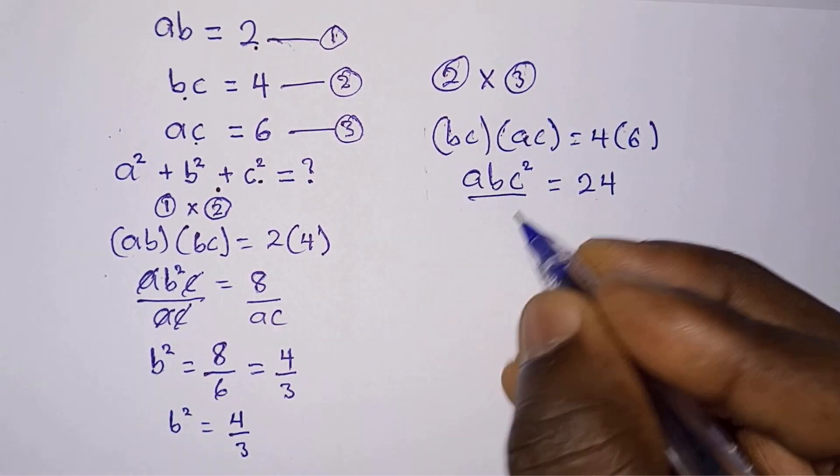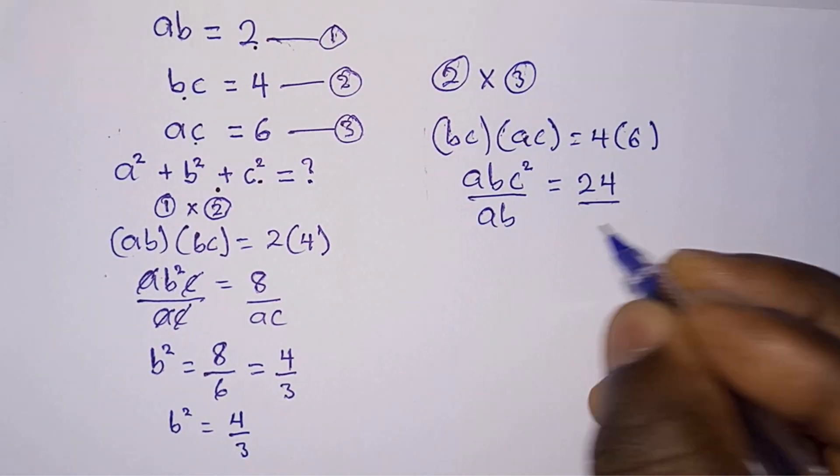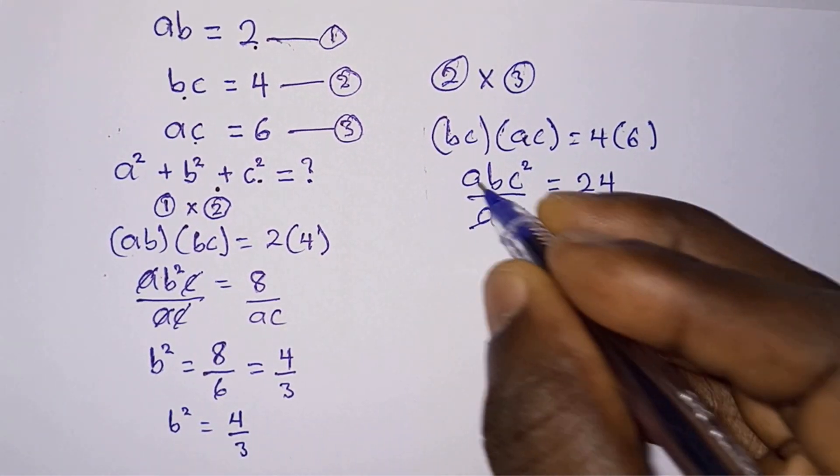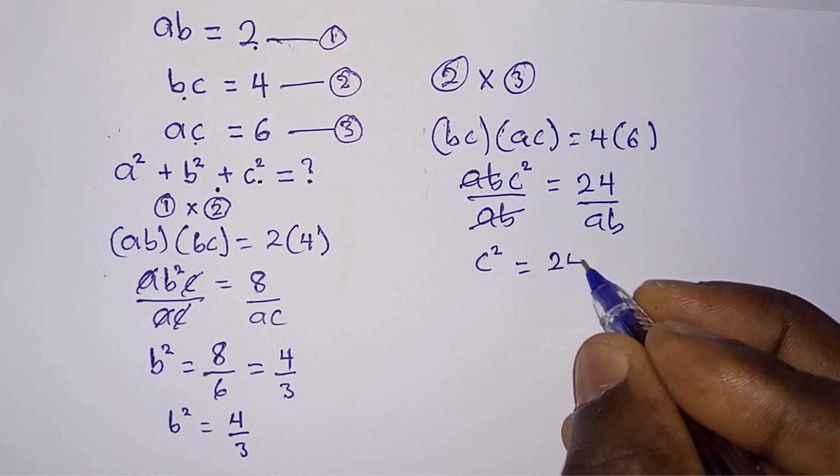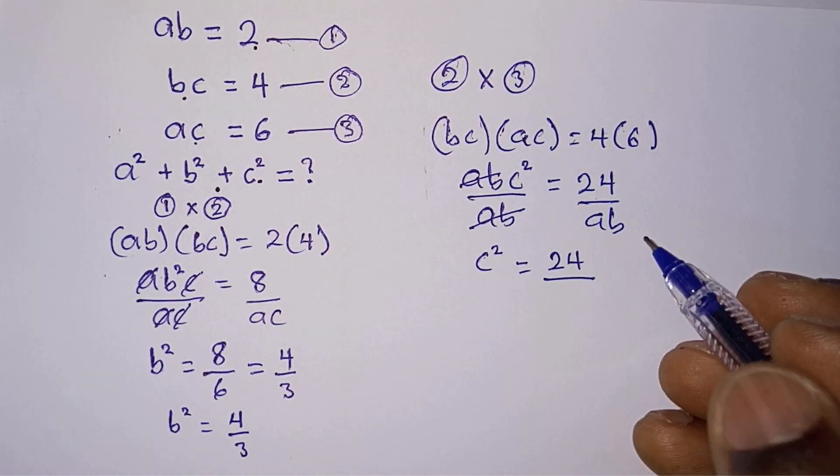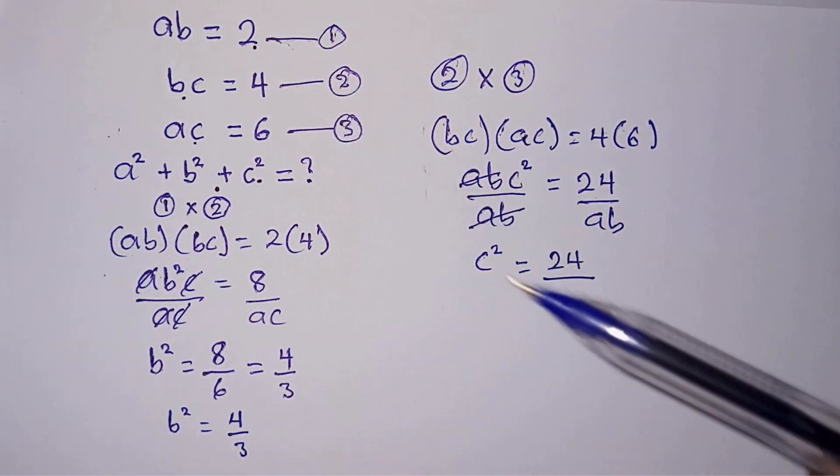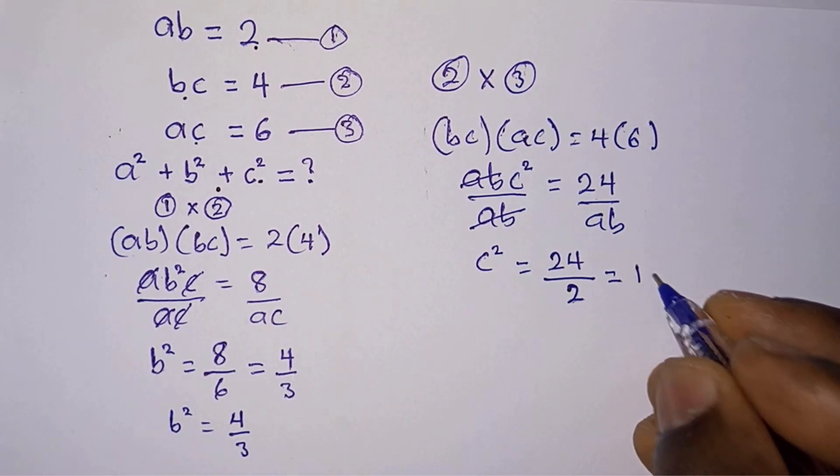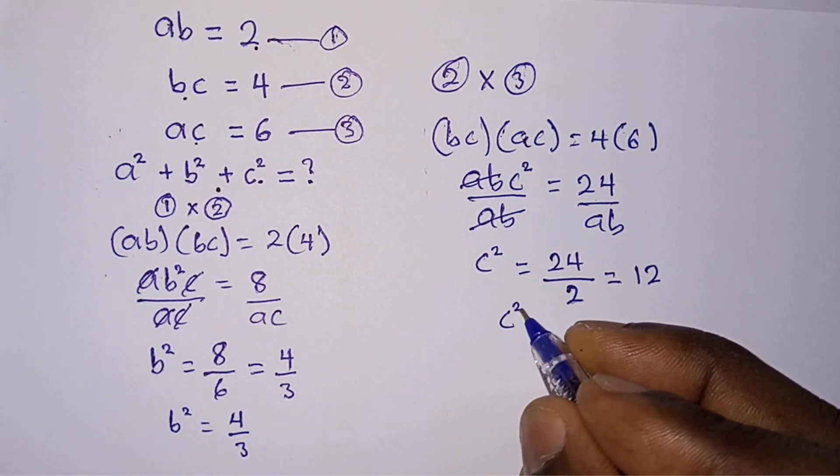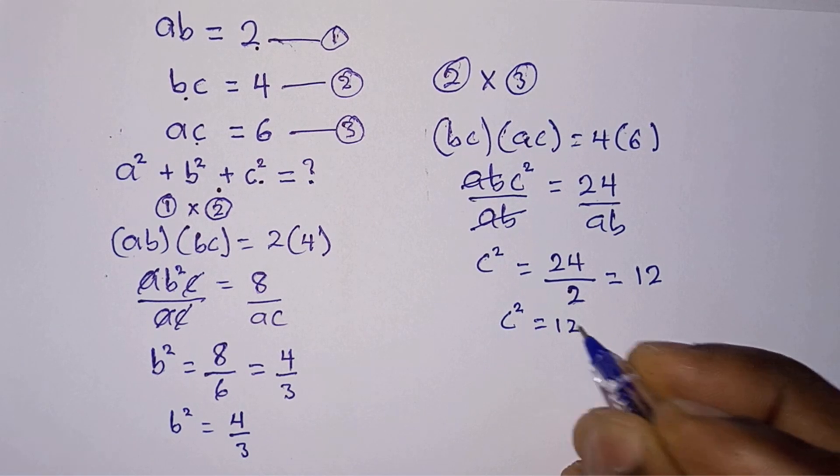Then we will also divide each side of this equation by ab. So this and this will go. We have c² = 24 over ab, but we know from equation 1 that ab = 2, so we have 24/2, which equals 12. Therefore c² = 12.